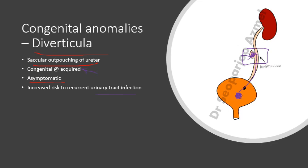The diverticulum can be congenital, due to anomalies of the musculature layers during ureter development, or it can be acquired due to injury from stones, trauma, or surgical interventions that cause injury to the ureter — all of which predispose the ureter to developing a diverticulum.